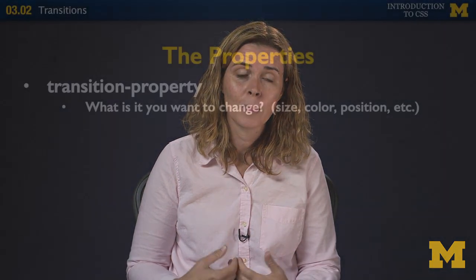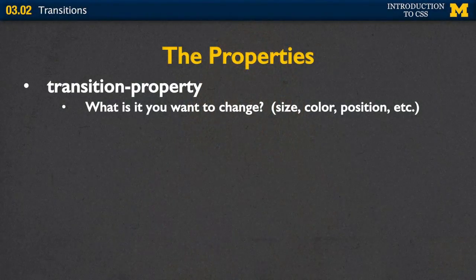If you want to add transitions to your page, there are four properties you're going to want to look at. The first is the actual transition property — what is it that you want to change? Do you want to change the size, the color, the position, or all of them?